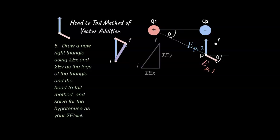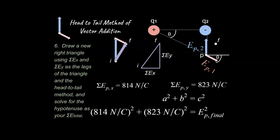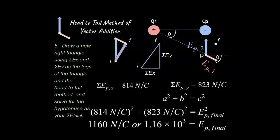We have a new triangle where the legs are the sum of the x-vectors and the sum of the y-vectors. We know two legs of a right triangle and want the hypotenuse, so we use the Pythagorean theorem. Plugging in the numbers gives our final vector — that is our answer to the problem.